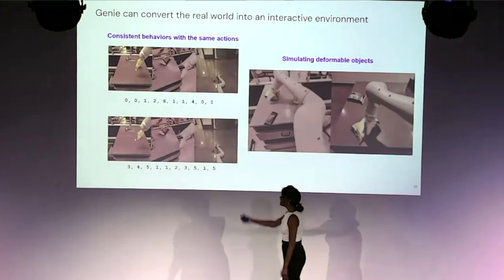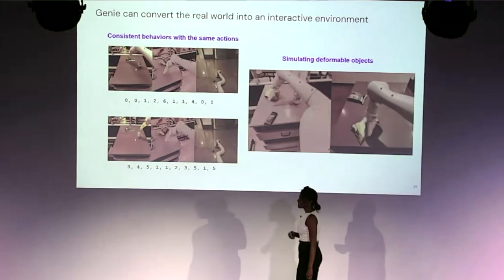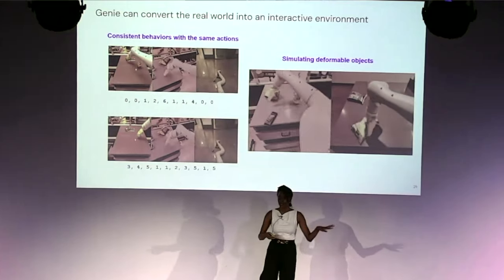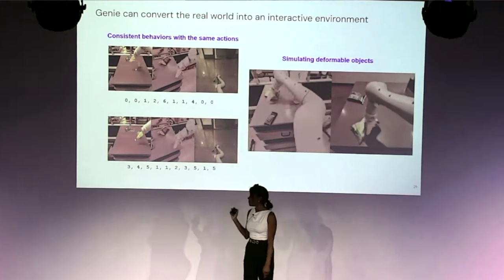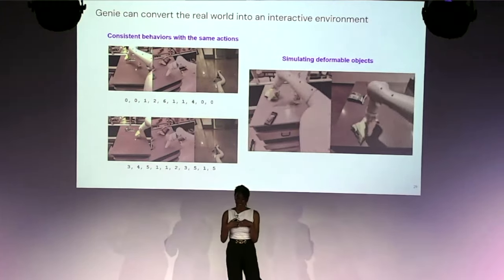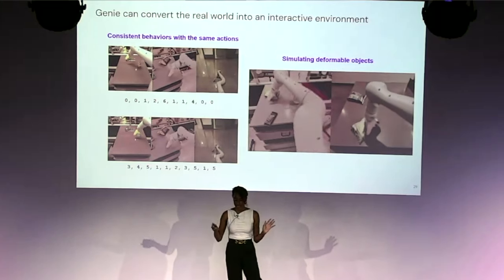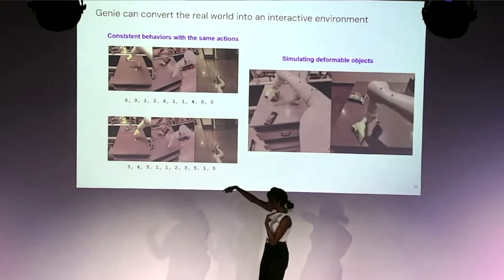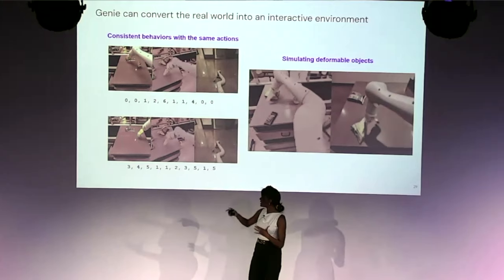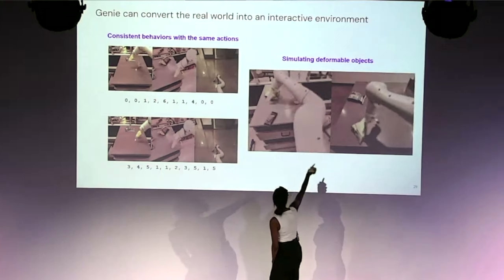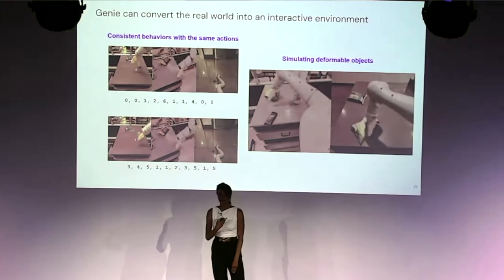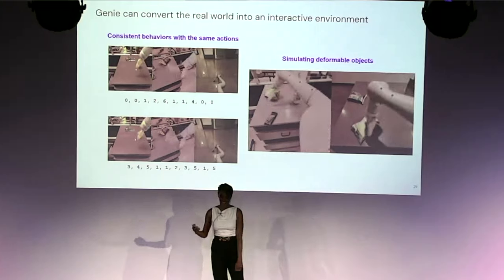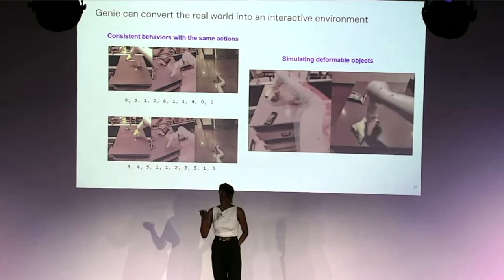Genie also works on real-world data. We trained a separate model on robotics data from RT-1 and QTOpt — stripping out the actions so we only learn to generate next frames. Given the same sequence of latent actions with different prompt frames, we see similar trajectories, and the model can even simulate deformable objects. We basically took the same hyperparameters from the platformer model and just plugged in a new dataset to see what would happen.